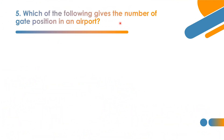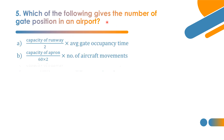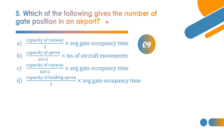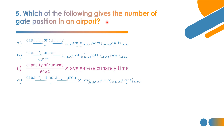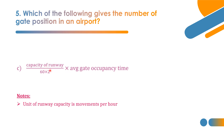Fifth question: which formula gives the number of gate positions in an airport? The correct answer is option C: Number of gate positions = (Capacity of runway / 60) × 2 × average gate occupancy time. The unit of runway capacity is movements per hour. This concludes the topics: runway length correction, exit taxiway radius, and number of gate positions in an airport.